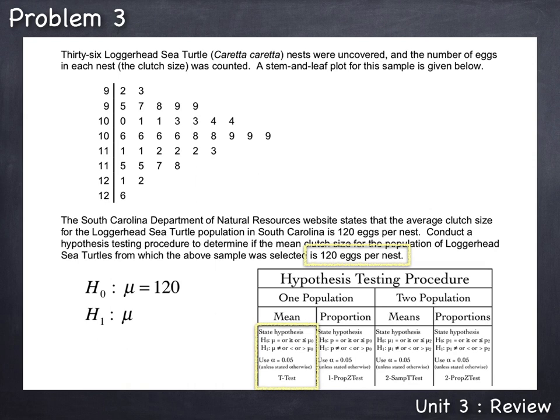For this problem, we'll set up H0 as μ equals 120. And when H0 includes the equal, the H1 is always the opposite, not equal. So H1 will be that μ is not equal to 120. Now that the first step stating the hypothesis is complete, we can go to the second step where we use α equals 0.05, unless stated otherwise. This problem does not state any other level of significance, so we will use the customary α of 0.05 or 5%.